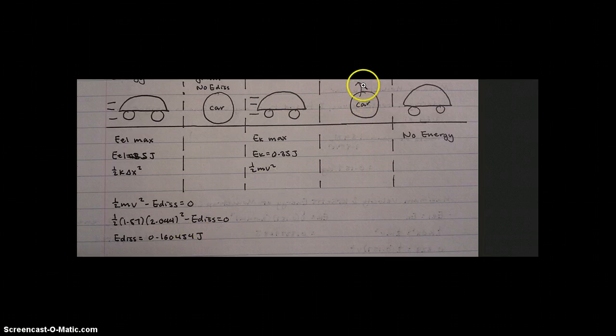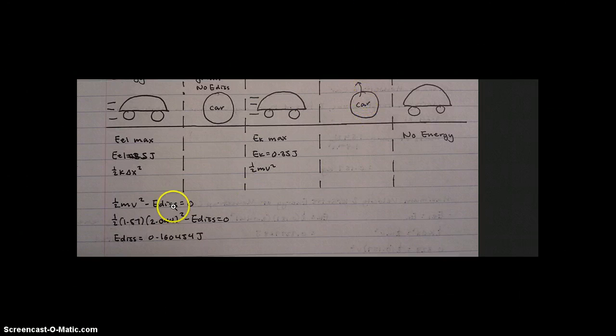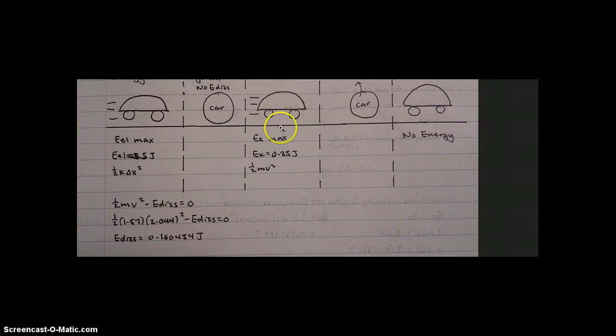So we have here, we just have this little segment here, 0.5 mv squared minus the edis equals zero for no energy. And when you plug everything in, edis becomes 0.1604 joules.